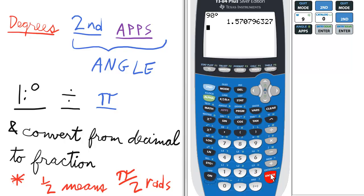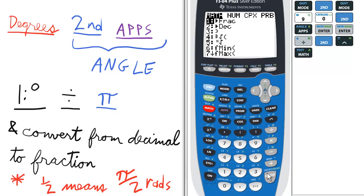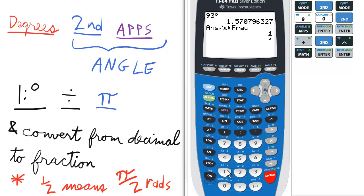So 90 degrees is 1.57 radians. Now your teacher probably wants this in terms of pi, so we're going to press divide, and then by the pi symbol, and then we want to convert it to a fraction, and press enter. And it's one half.